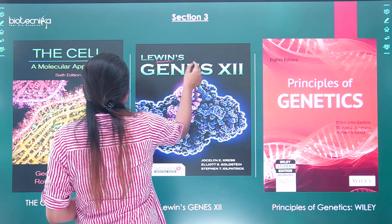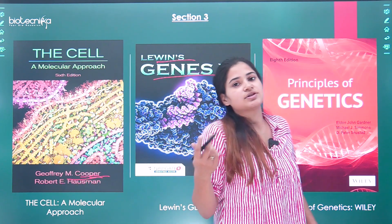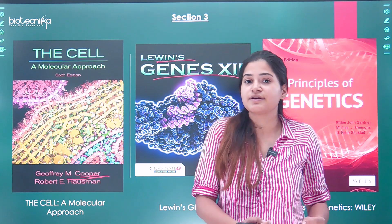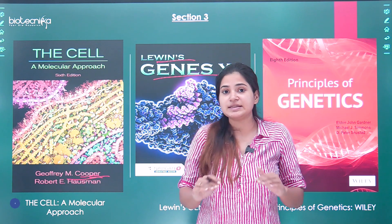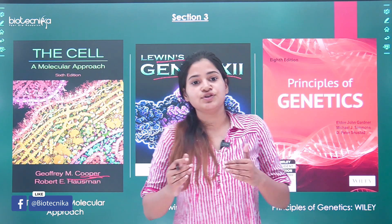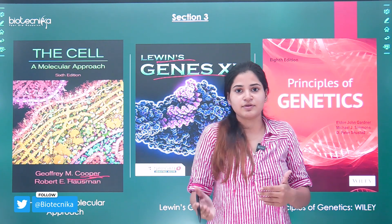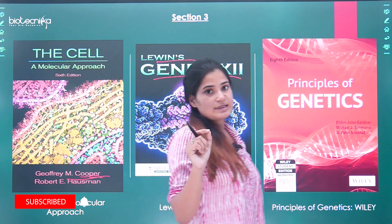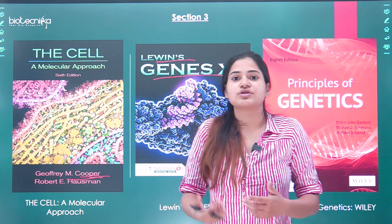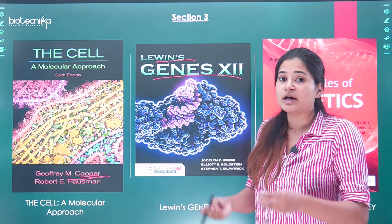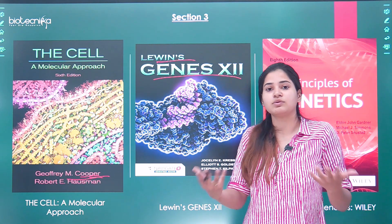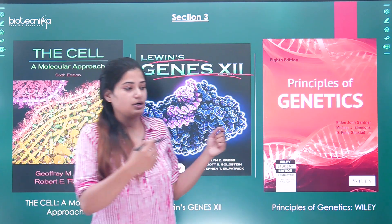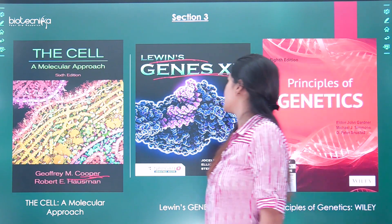The next topic is molecular biology. For DNA replication, transcription, translation, and DNA repair mechanisms, Lehninger has given it very well — in great detail and neatly explained, including types of repair, replication, transcription, protein synthesis, and modifications. But if you want a detailed explanation of genes, their structure, operon models, gene cloning, and their relation to recombinant DNA technology, you can refer to Lewin's Genes. This is a very, very nice book for those specific topics.